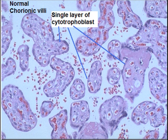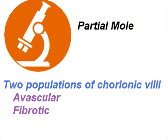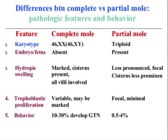In partial mole microscopically, there are two populations of chorionic villi: avascular and fibrotic. Comparing partial and complete mole: the karyotype of complete mole is diploid and partial mole is triploid. Embryonic tissue is absent in complete mole and present in partial mole.